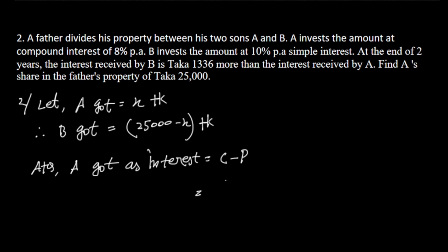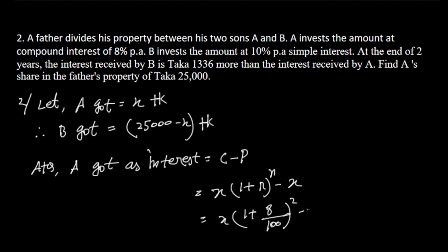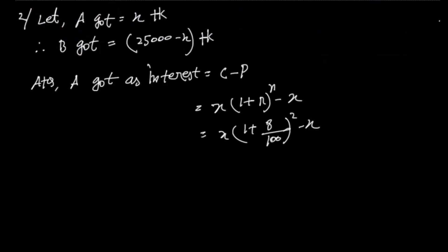The compound interest formula: C equals P into 1 plus r divided by 100 to the power n minus P. Here P is X, r is 8%, and n is 2. So compound interest equals X into 1 plus 8/100 squared minus X, which is X into 108/100 squared minus X.